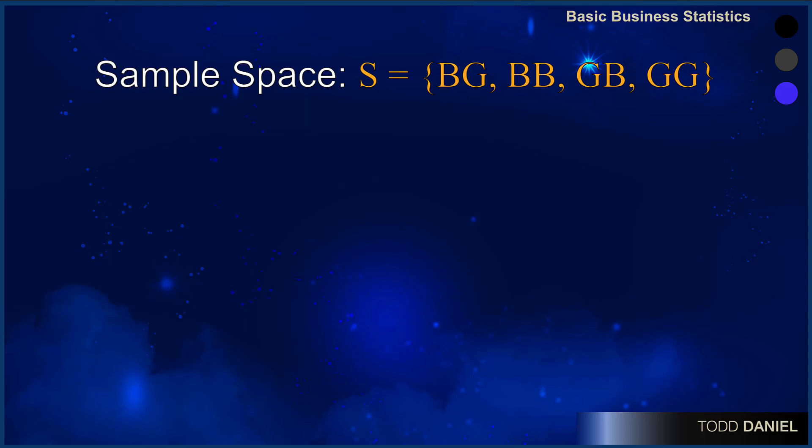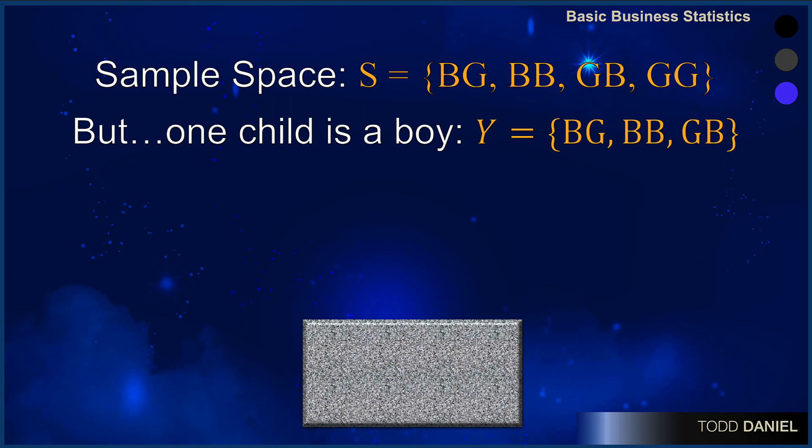Let's start by examining the sample space. The sample space is all possible outcomes that could occur. Charles and Emma could have a boy and a girl, a boy and a boy, a girl and a boy, or a girl and a girl if they have two children. But we already know that one child is a boy. This now changes our sample space. There are only three possibilities: boy-girl, boy-boy, girl-boy.